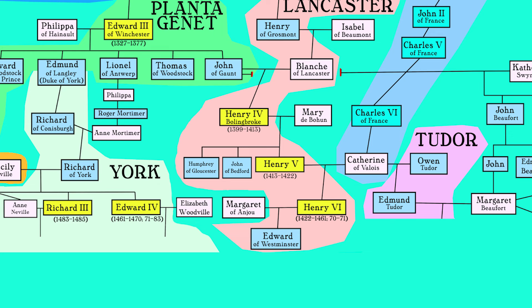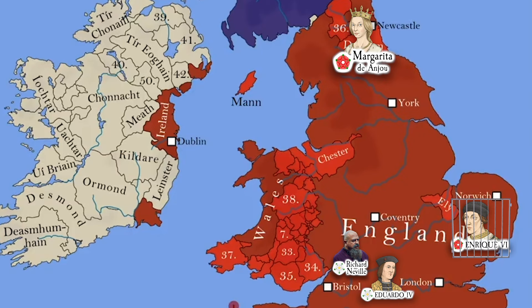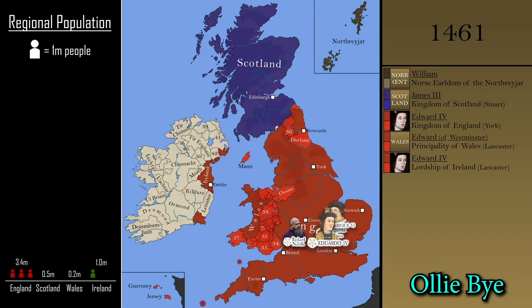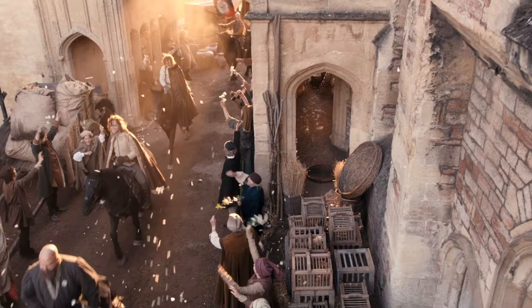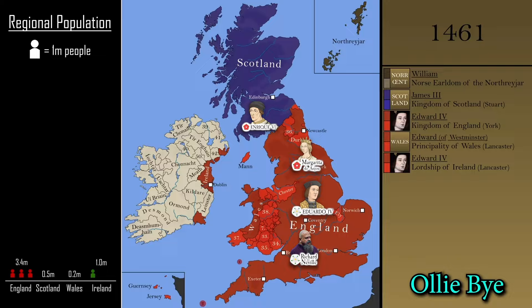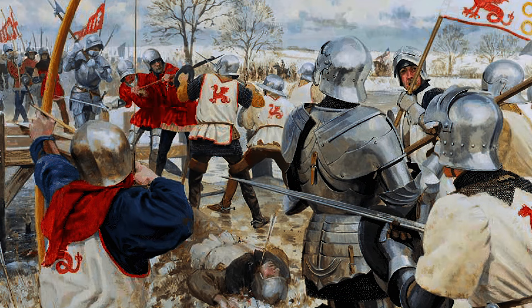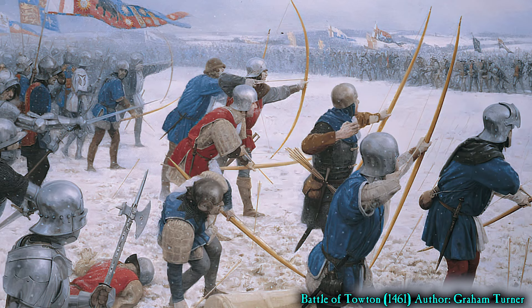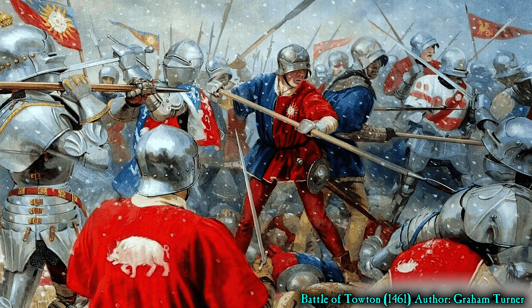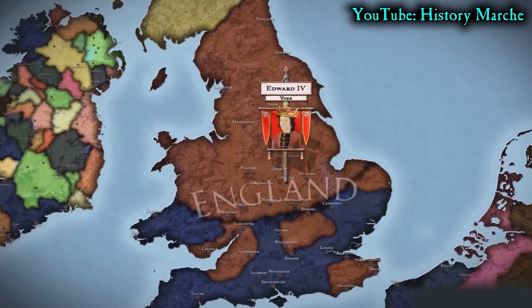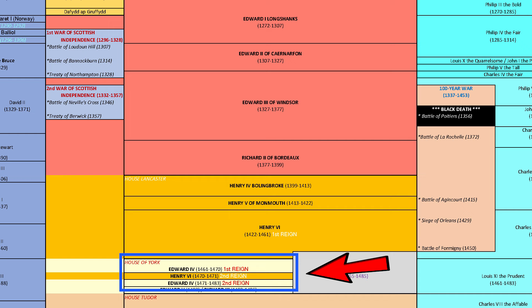One notable victim of the Battle of Mortimer's Cross was Owen Tudor, the second husband of the former Queen Catherine of Valois, who was captured and killed by the House of York. Queen Margaret of Anjou then launched a counter-attack and was victorious at the Second Battle of St Albans, managing to rescue her husband King Henry VI from prison. Meanwhile, in London, Edward of March got himself crowned as King Edward IV in 1461. The House of York had finally managed to take the English throne, but Margaret would not give up easily — that led to the Battle of Towton in Yorkshire, arguably the largest and bloodiest encounter ever fought on English soil. The House of York won the day, while the Lancastrians had to run away to Scotland.